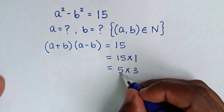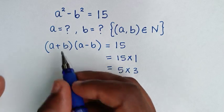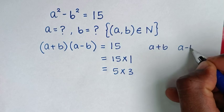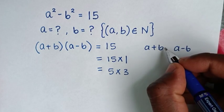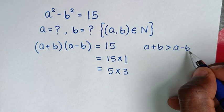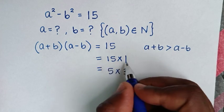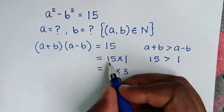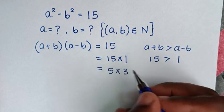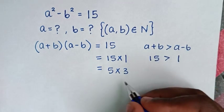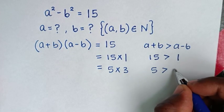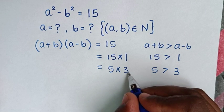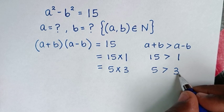Now, comparing a plus b and a minus b, we note that a plus b is greater than a minus b. So for the first factor pair, we assign 15 to (a + b) and 1 to (a - b), since 15 is greater than 1. For the second pair, we assign 5 to (a + b) and 3 to (a - b), since 5 is greater than 3.